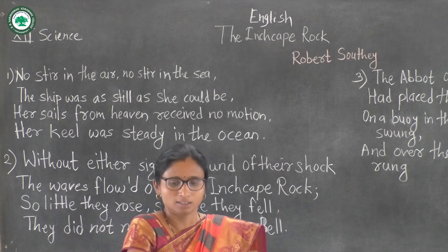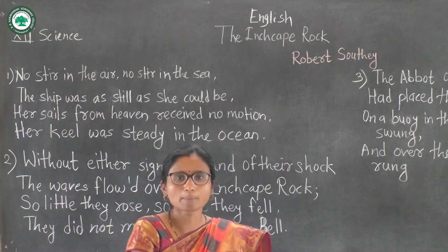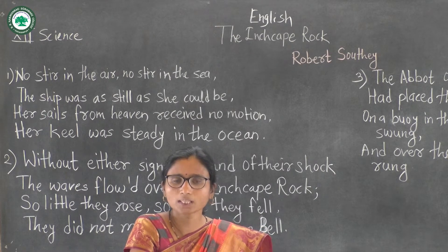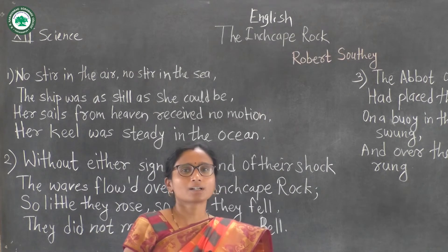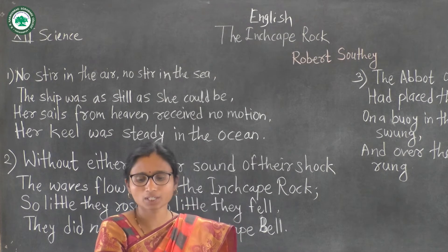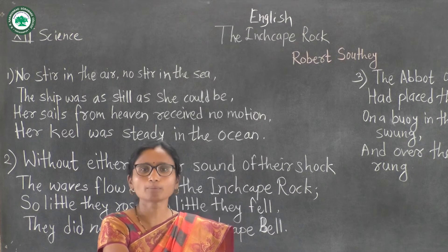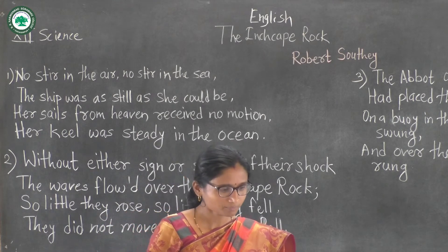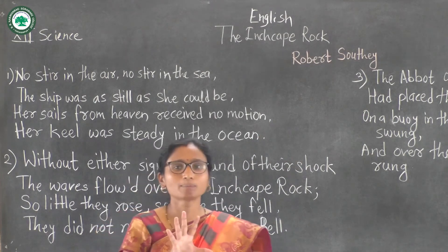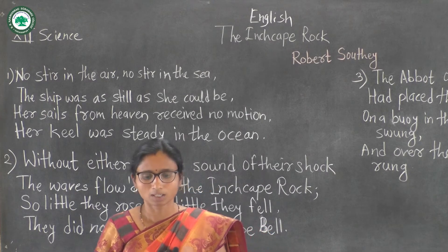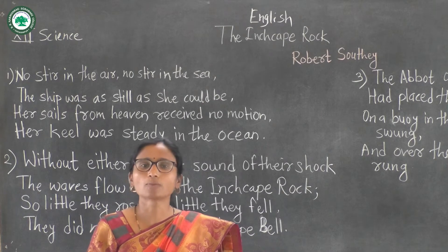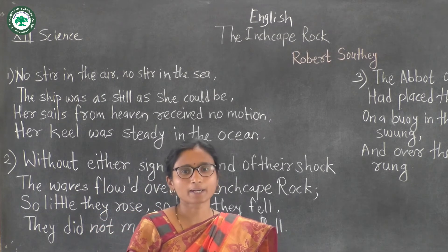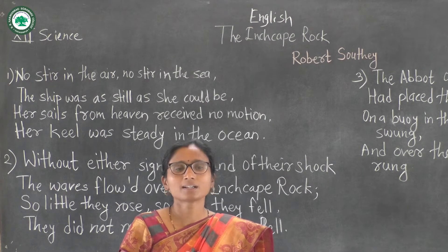Some of his famous short poems popular with school children are The Scholar, The Battle of Blenheim, Bishop Hatton, and The Inch Cape Rock. This poem is a ballad and was published in 1802. A ballad means a poem or song narrating a story in short stanzas. The poet Robert Southey was inspired by a story of the 14th century attempt by the Abbot of Aberbrathok to install a warning bell on the Inch Cape Rock, which was cut down by a sea pirate named Sir Ralph Rover.